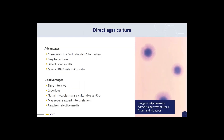The direct agar culture method uses both broth and agar, which permits the isolation of culturable strains as apparent by the appearance of characteristic mycoplasma colonies on the agar medium. Two agars and one broth tube are inoculated for each sample, then incubated and subcultured for specific days. Results are read separately by two individuals. Advantages include that it is the gold standard for testing, easy to perform, detects viable cells, and meets FDA points-to-consider recommendations. Disadvantages include that the assay is time intensive, laborious, not all mycoplasma are culturable in vitro, it may require expert interpretation, and it often requires selective medium.